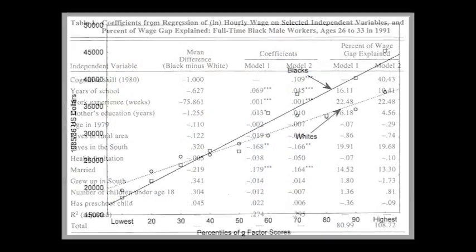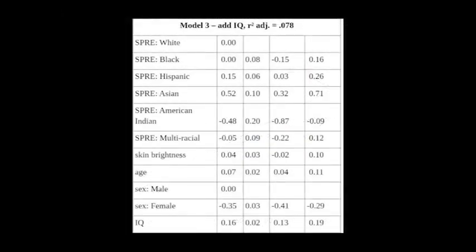Right, because multiple studies have shown that controlling for IQ makes racial differences in income go away.